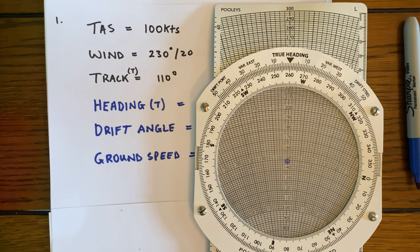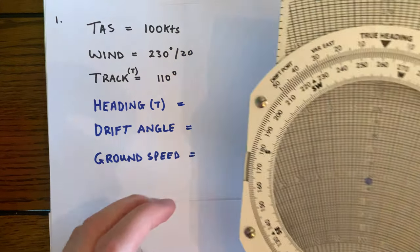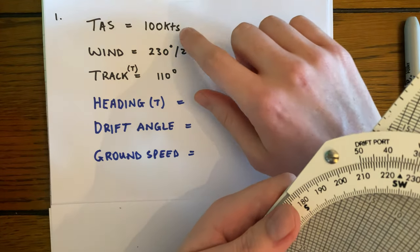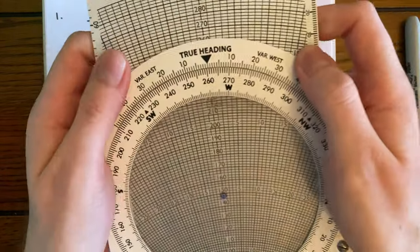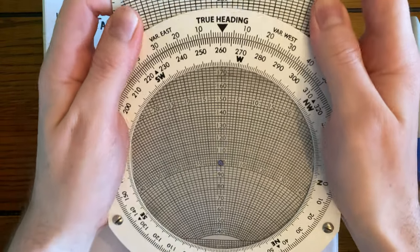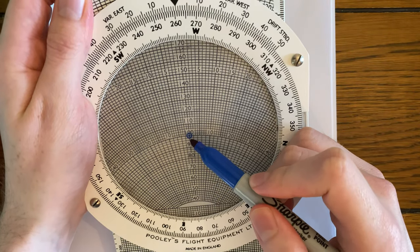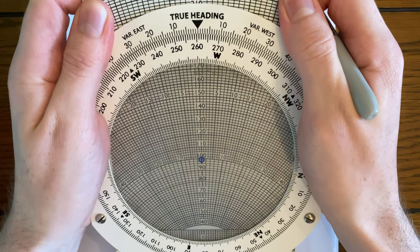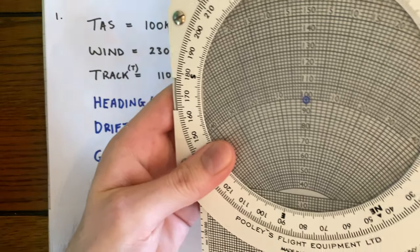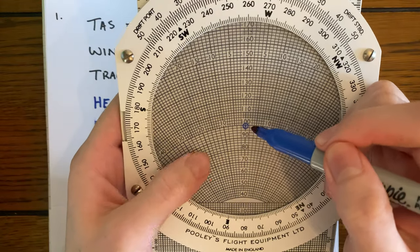So let's get started. We're given here a TAS of 100 knots, and that's what we're going to use first. We're going to set the 100 knots in line with this blue center point. So we'll just line that up—TAS 100 knots, and we've lined our center point up on the 100 knots.